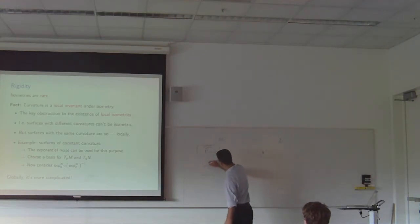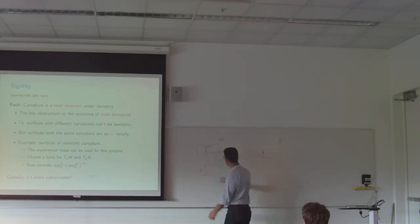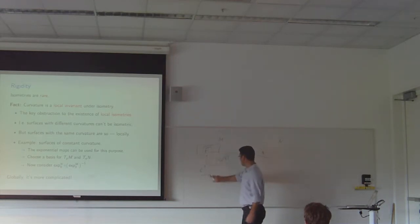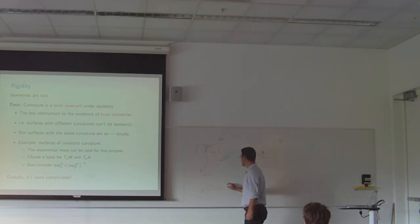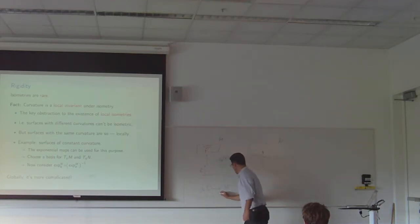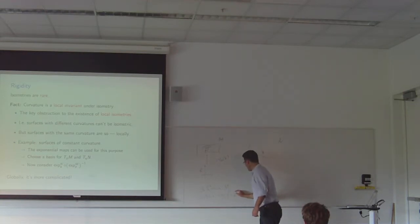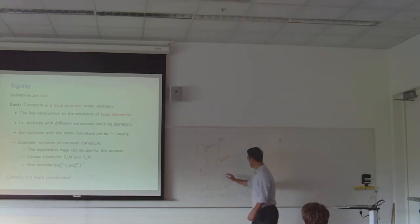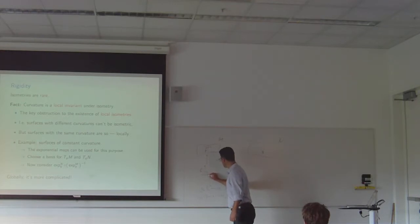Once you choose a basis, this is now R², and once you choose a basis, you can actually make the exponential map go from R², at least some subset of R², into the manifold. You can say a point (s1, s2) maps to the exponential at P of s1·e1 plus s2·e2, where e1 and e2 are the chosen basis for the tangent plane.